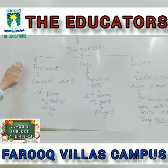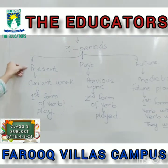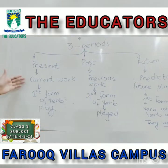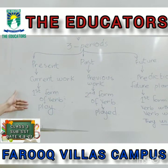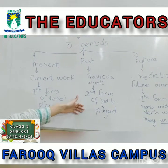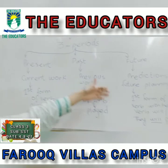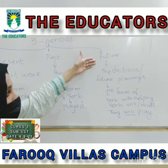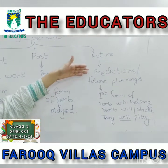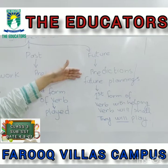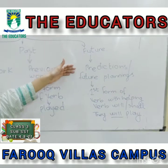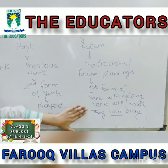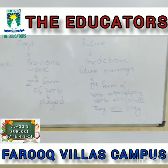You have already learned about the present and past tense. Here is a short review: current work uses the first form of the verb; previous work uses the second form of the verb. Our today's topic is future tense. In future tense we will discuss predictions or future work to happen. We will use the first form of the verb with helping verb 'will' and 'shall'.